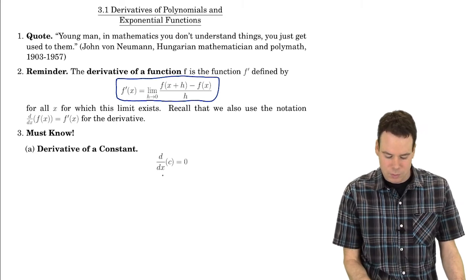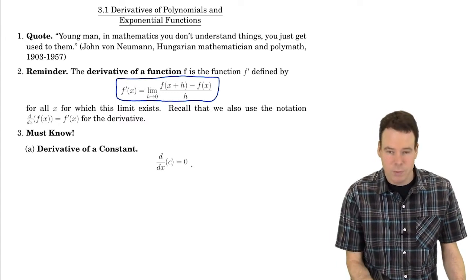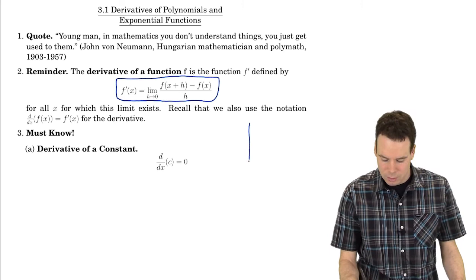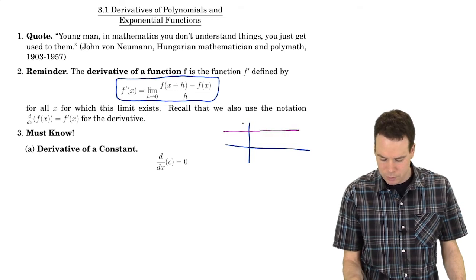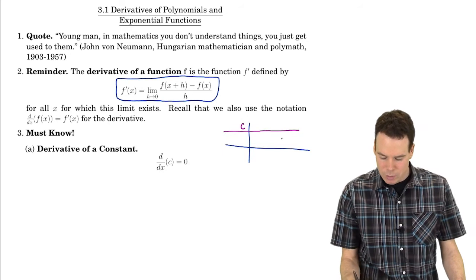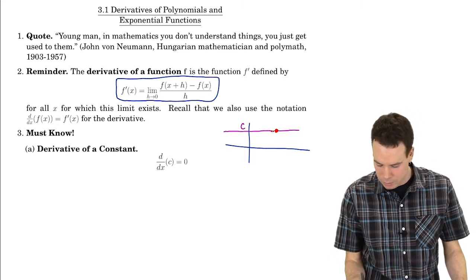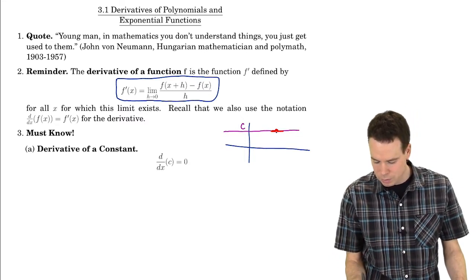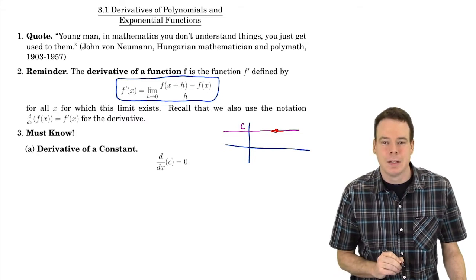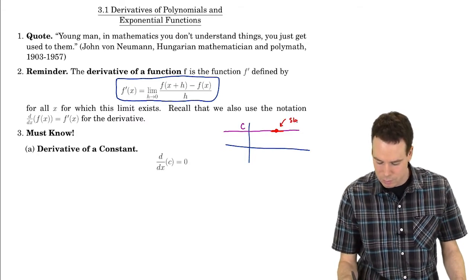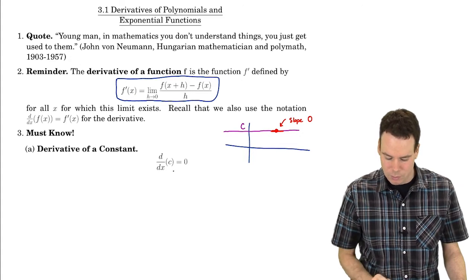Let's look at this first example: the derivative of a constant function. Well, that's going to be zero. There are a couple of ways to look at this. If it's a constant function, the graph is a horizontal line — say, a constant function of height c. At any point along this line, what is the slope of the tangent line? Well, the tangent line is also going to be a horizontal line. The tangent line actually overlaps the entire line, so you can't distinguish between them. So the slope of this tangent line is zero.